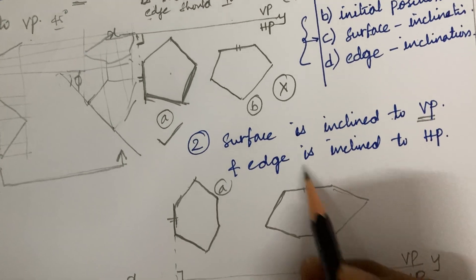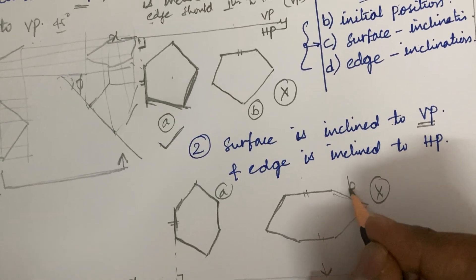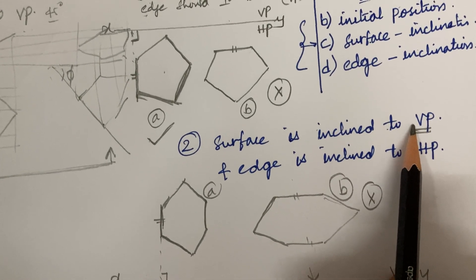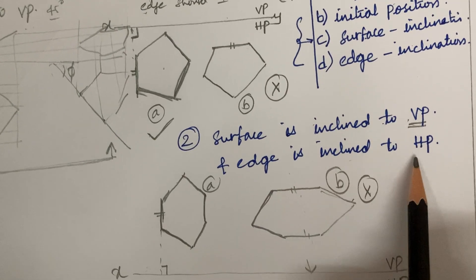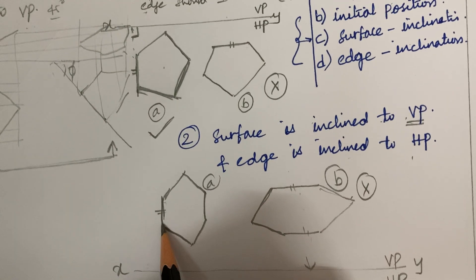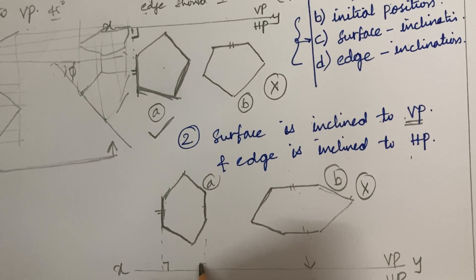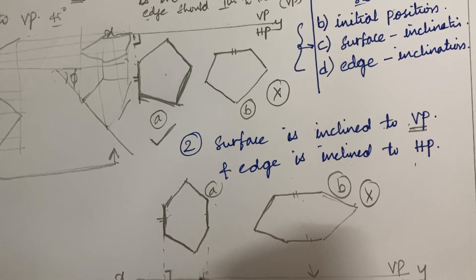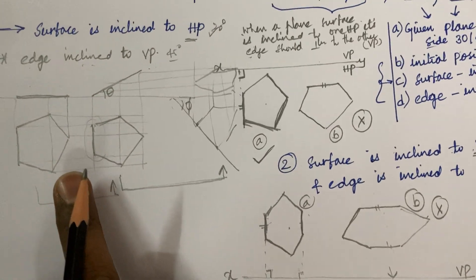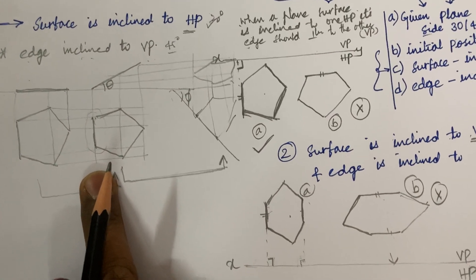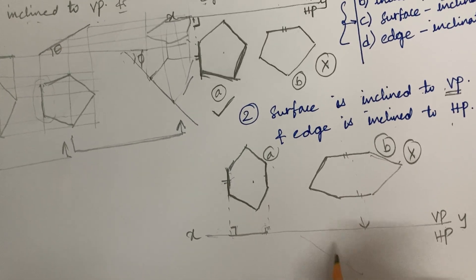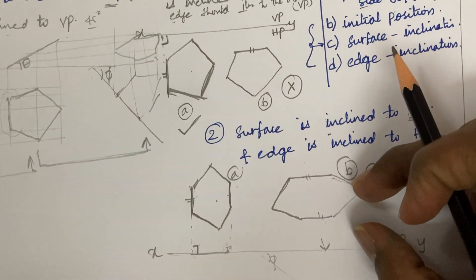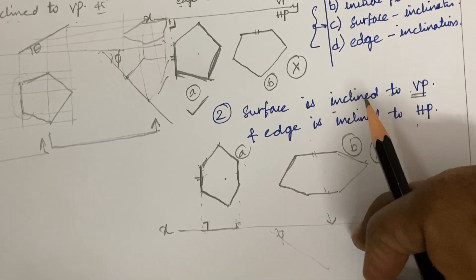Your hexagon position should have the straight edge perpendicular to VP — this is the correct position, not the other one where straight edges are parallel to VP, which is incorrect for this condition. Since the edge is inclined to VP, the edge which is inclined to VP needs to be placed perpendicular to VP. The straight edges must be perpendicular and the surface is parallel. In the next step, take the straight line you obtained, incline it with the given angle, project it, then take edge AB in the third step, tilt it, and project down to get the final view.